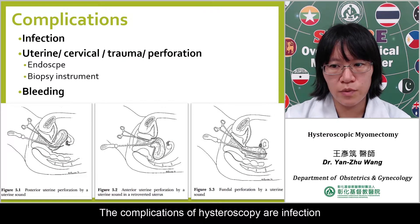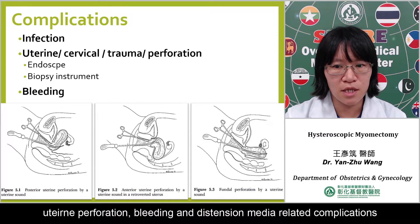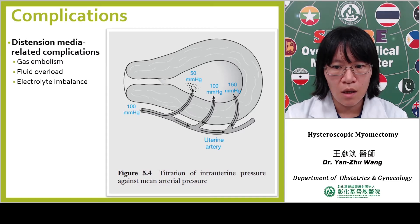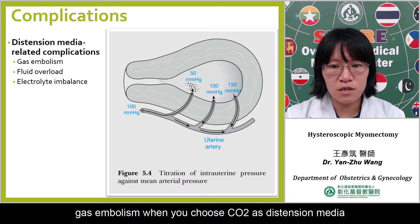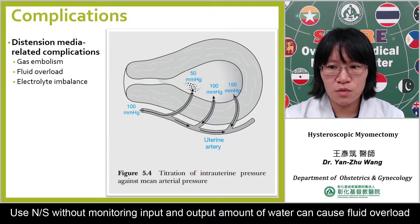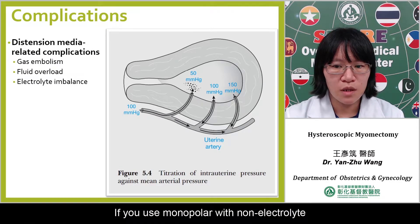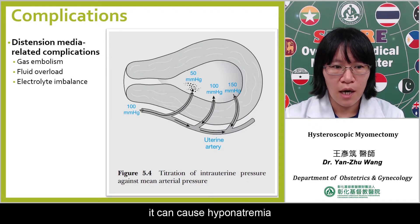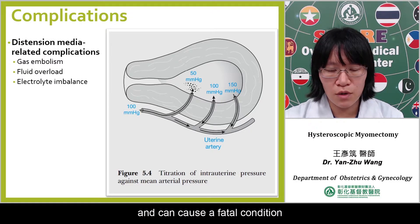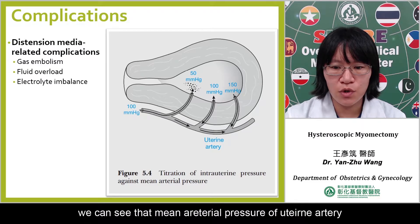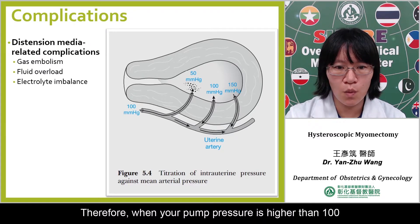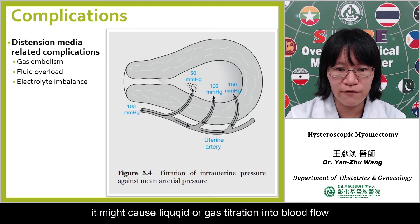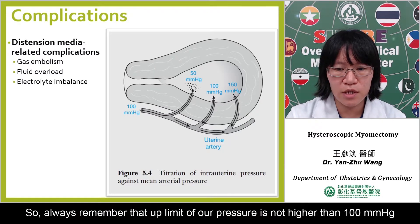The complications of hysteroscopy are infection, uterine perforation, bleeding, and distension media-related complications. These include gas embolism when you choose carbon dioxide. Using normal saline without monitoring input and output amount of water can cause fluid overload. If you use monopolar with non-electrolytes, it can cause hyponatremia and can cause a fatal condition. The mean arterial pressure of the uterine artery is about 100 mmHg. Therefore, when your pump pressure is higher than 100 mmHg, it might cause liquid or gas extravasation into the bloodstream. Always remember the upper limit of our pressure should not exceed 100 mmHg.